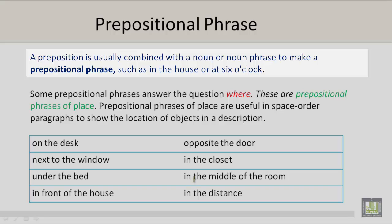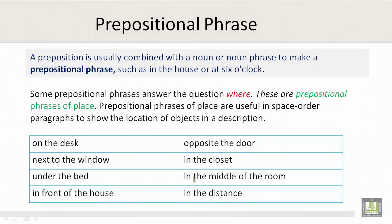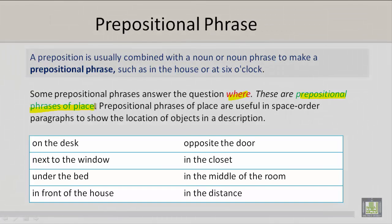or noun phrase to make a prepositional phrase, such as in the house or at six o'clock. Some prepositional phrases answer the question where. These are prepositional phrases of place. Prepositional phrases of place are useful in space order paragraphs to show the location of objects in a description. For example, on the desk, opposite the door, next to the window, in the closet, under the bed, in the middle of the room, in front of the house, in the distance.